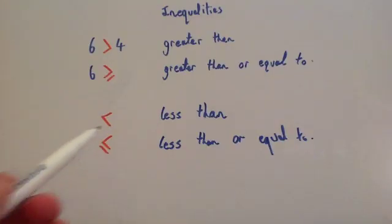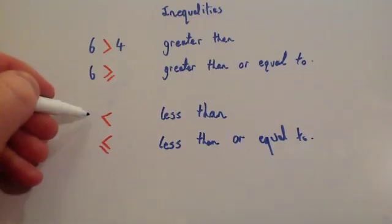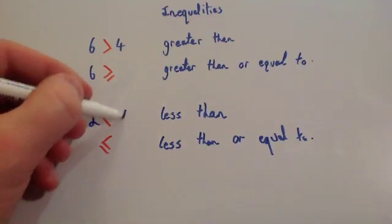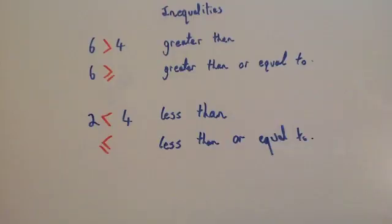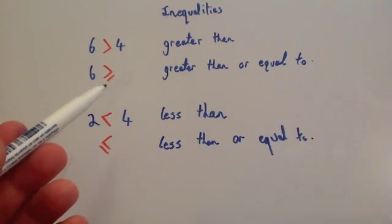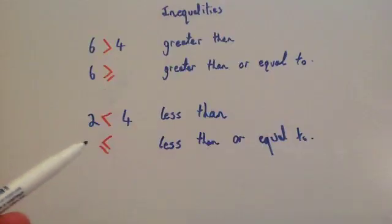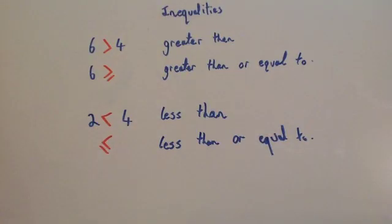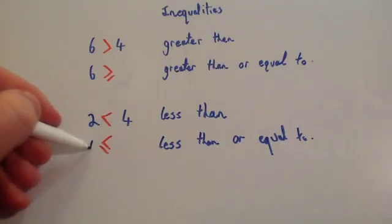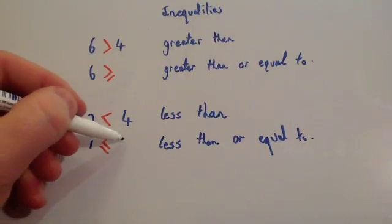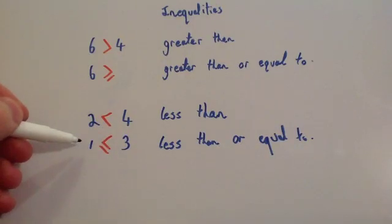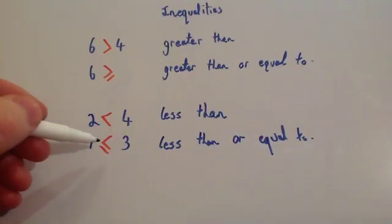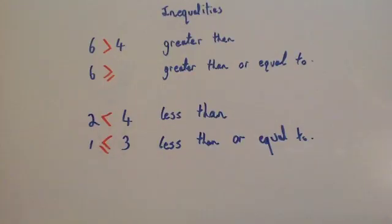This symbol means less than — so for instance 2 is less than 4. And this one means less than or equal to. If it's got an extra little line underneath it, it means either greater than or equal to, or less than or equal to. So you could write 1 is less than or equal to 3, or even 3 is less than or equal to 3, because you've got the equal to part as well.